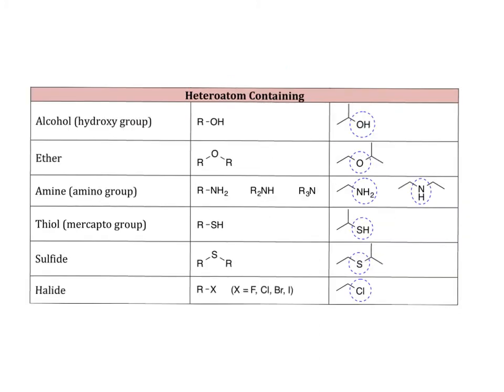The next class are the heteroatom-containing functional groups. And some of these have kind of more than one name you can give them. For example, an OH. That is an alcohol functional group, but it might also be called a hydroxy group, and both would be correct. If you have an oxygen where you have a carbon on each side, so a carbon here, a carbon here, that's called an ether functional group.